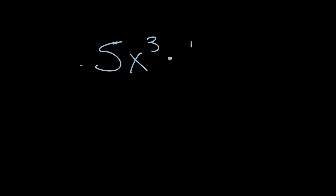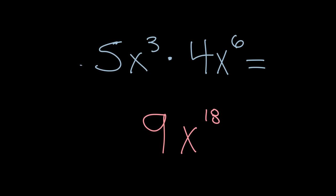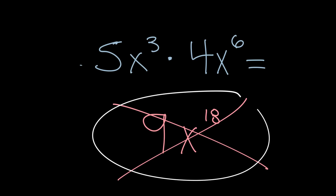I'm going to leave you on a cliffhanger. I've been varying the variables to show you it doesn't matter which letter is used. Look at this: 5X to the third power times 4X to the sixth power. Here's a wrong answer a student gave me: 9X to the 18th power. That's terribly wrong. Think about what we've been discussing — what did they do with the 5 and the 4 to get 9, and what should they have done? What did they do with the 3 and the 6 to get 18, and what should they have done instead?